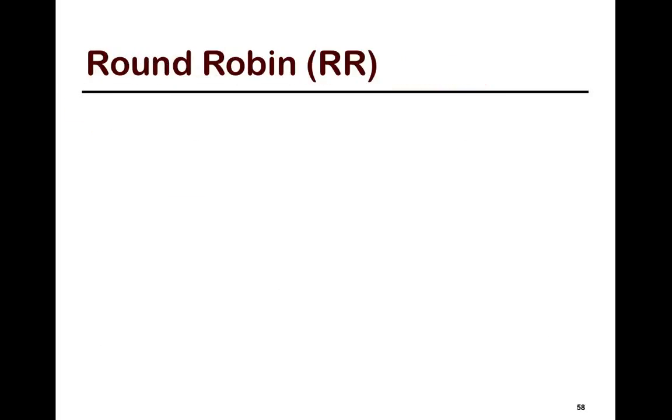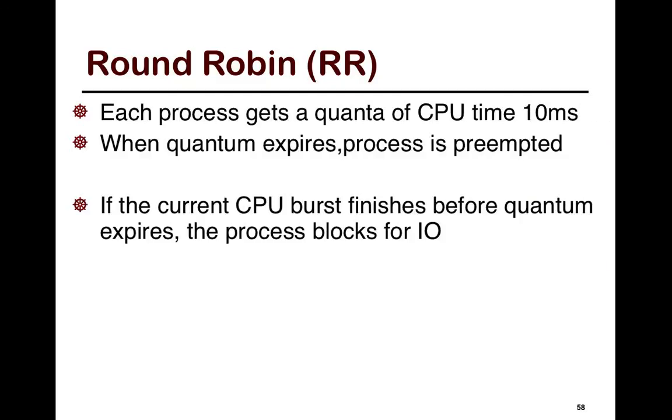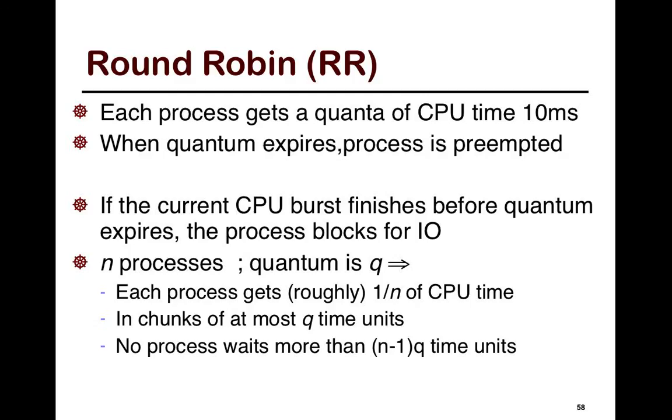So, the next algorithm we're going to look at is round-robin, and this is the one that's used in UNIX and Linux and MOSIS, a lot of variants of this. So, in round-robin, each process gets a quantum of CPU time. When the quantum expires, the process is preempted.